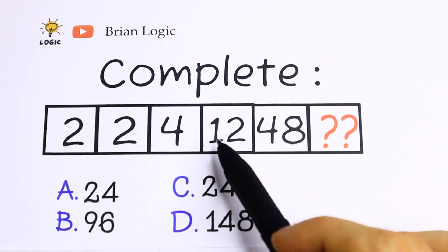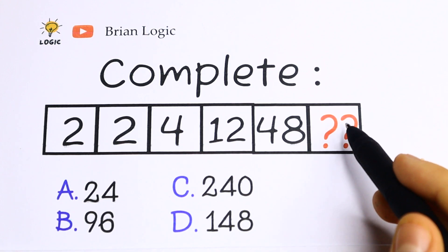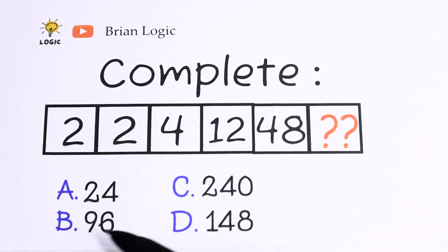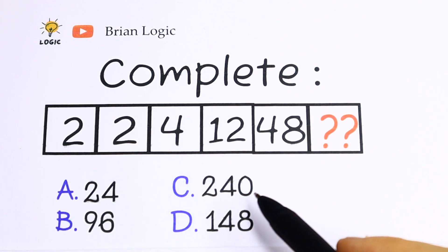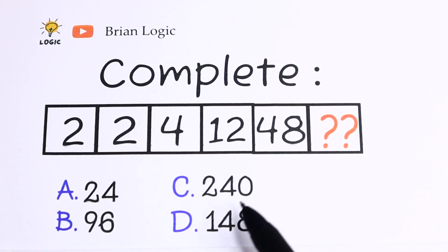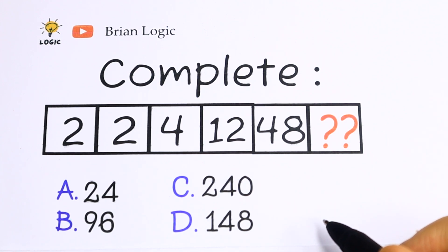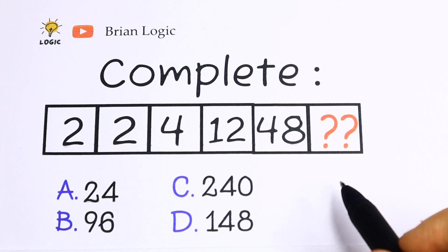We have 2, 2, 4, 12, and 48, and we need to find the last number. What's the pattern between all of these numbers? You can see we have options A, B, C, and D. Pause the video now and write your answer in the comments. After 10 seconds we will solve this interesting IQ question.